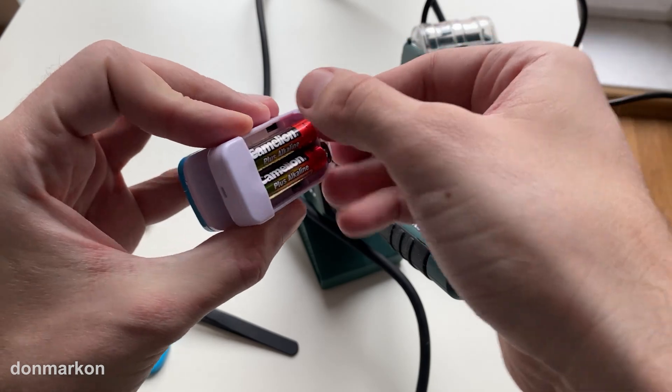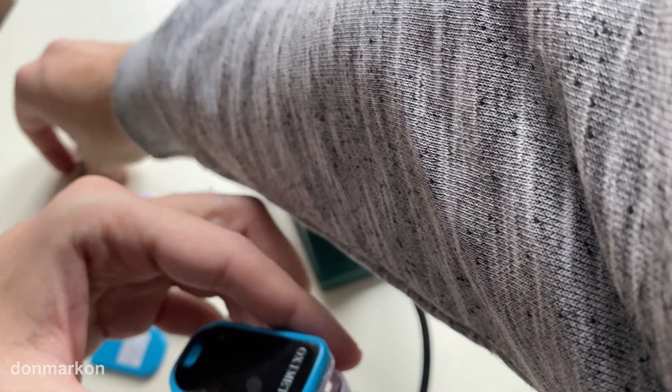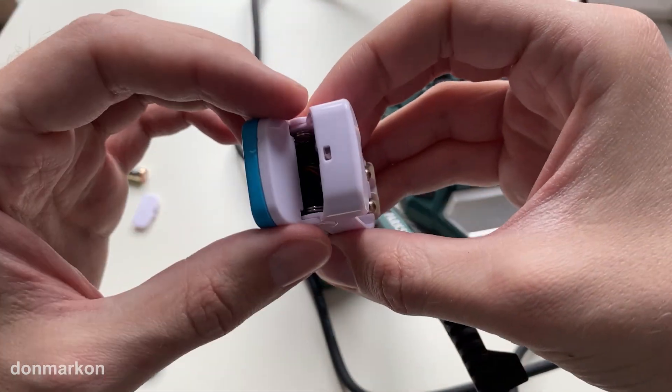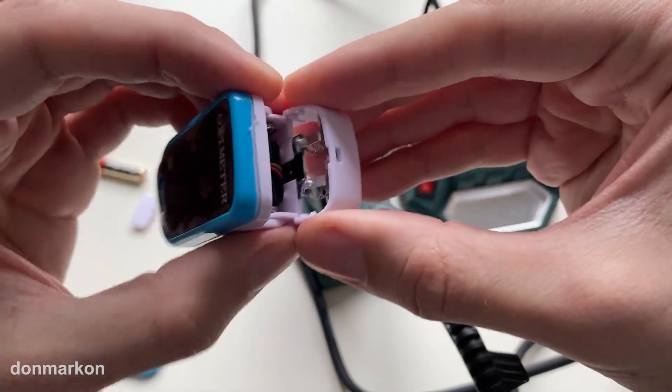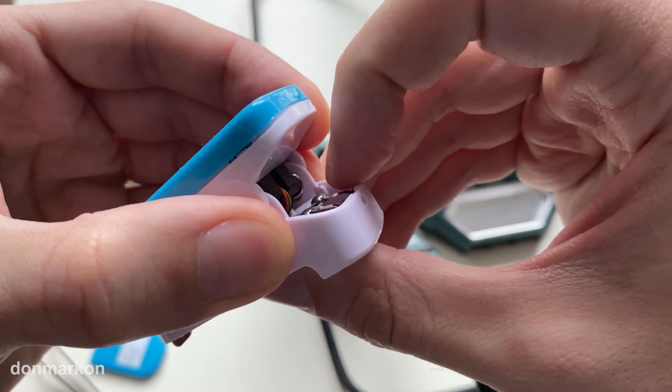Always first remove the batteries when you're soldering. I could disassemble this oximeter completely, but there is no need to do that. You can just bend this a bit like this.